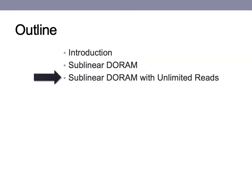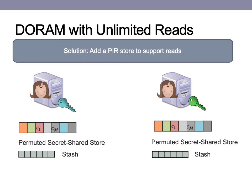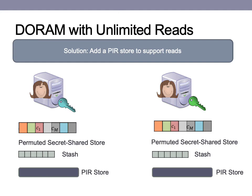Now we move on to our sublinear DO-RAM with unlimited reads construction. Our motivating thought is the question: if we are willing to leak the difference between reads and writes, can we support reads without updating the internal state of the servers, and thus put off the costly reshuffling process at the end of an epoch? To do this, we turn to another technique to hide data accesses: private information retrieval, or PIR. PIR is a read-only protocol and the servers are stateless during a read access, meaning they provide obliviousness without having to update the server's state. Using PIR, the simplest solution is to add a PIR store in addition to the store and the stash already existing from our previous scheme. Due to the overall modularity of our first scheme, writes remain the same as the first protocol.